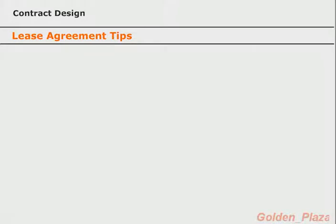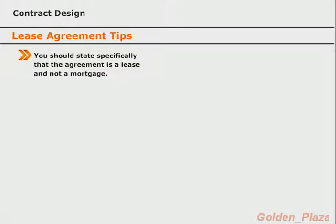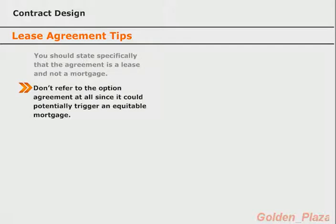The first thing is, as part of the renter's insurance clause, you should state clearly that the agreement the tenant buyer is agreeing to is a lease agreement, not a mortgage. Having such a statement can be important if equitable title becomes an issue. Additionally, you don't want to refer to the option agreement or to any option considerations or credits in the lease agreement. The reason you want to avoid talking about the option is because it could, albeit it's a long shot, be misconstrued in a court as a mortgage and not a lease. So be safe and don't mention anything about the option in the lease agreement.